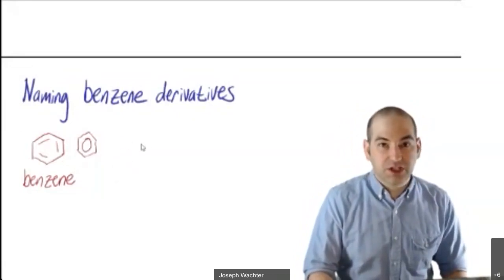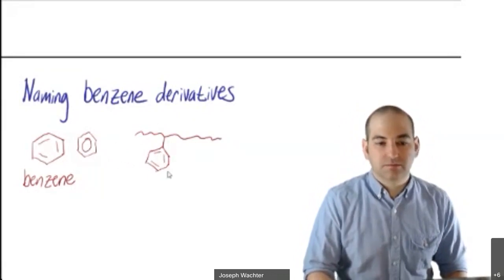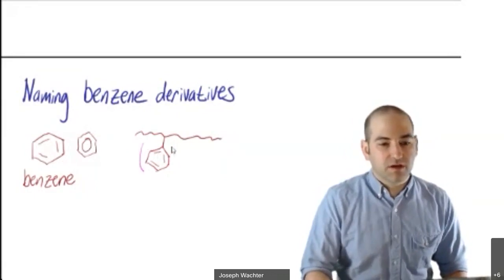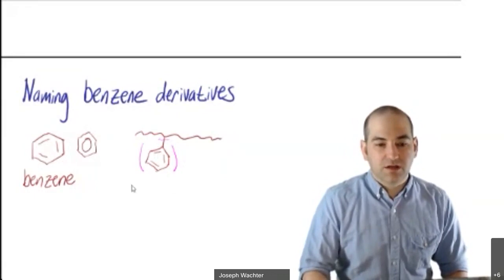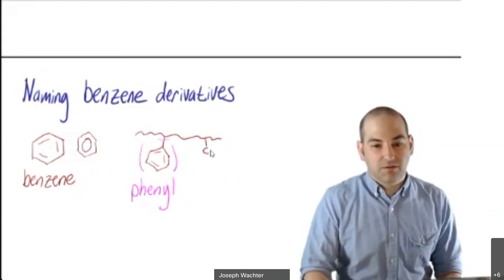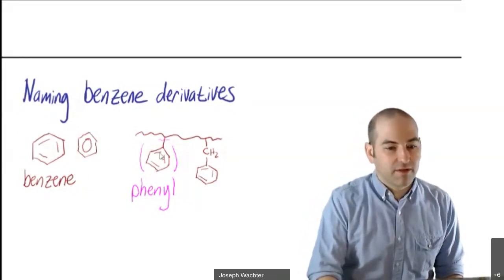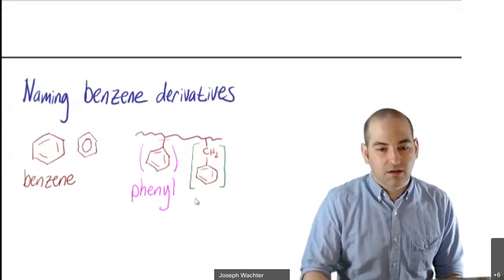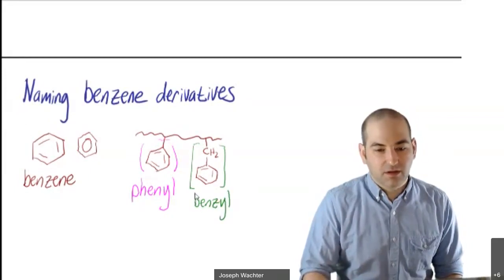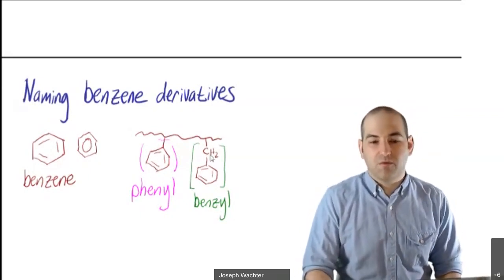If benzene is a substituent on something else — say we have some big molecule and there's a benzene ring on it — this particular substituent is called phenyl. There's another substituent where the benzene is connected via a CH2, one carbon away, and that whole thing is called benzyl. So benzyl is the ring plus a carbon, and we'll talk about why that's a special position in a little bit.